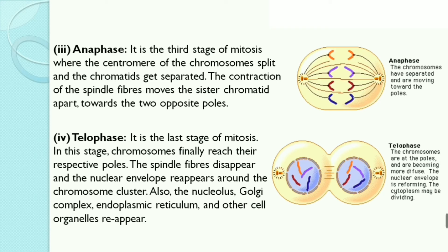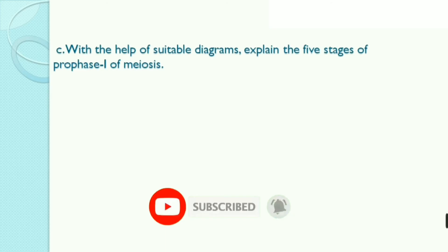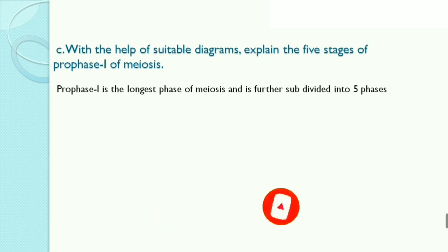Also, the nucleolus, Golgi complex, endoplasmic reticulum, and other cell organelles reappear. Third, with the help of suitable diagrams, explain the five stages of prophase 1 of meiosis. Prophase 1 is the longest phase of meiosis and is further subdivided into five phases.